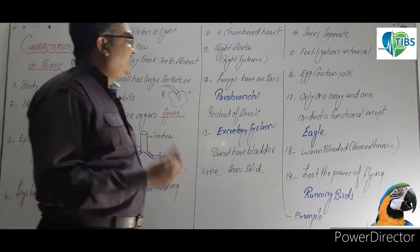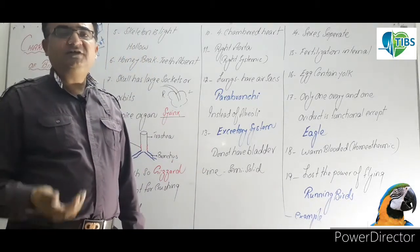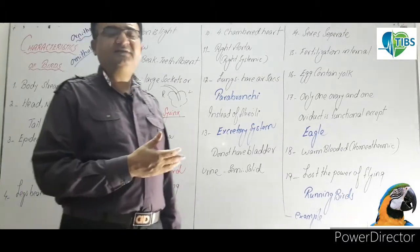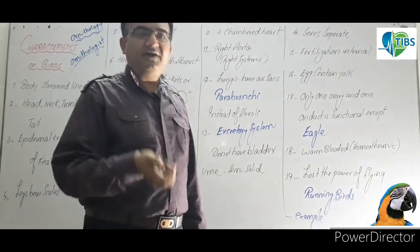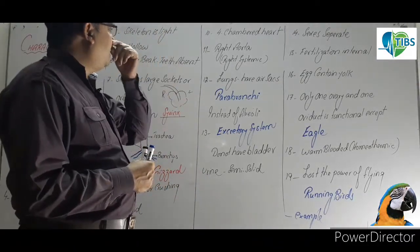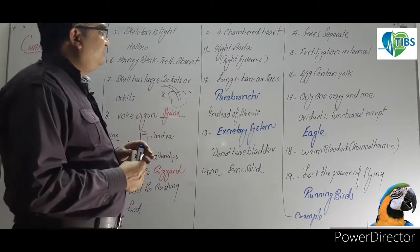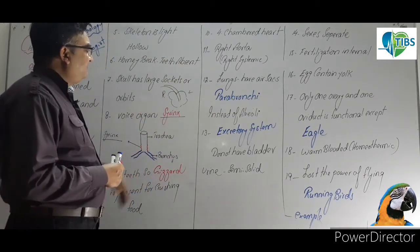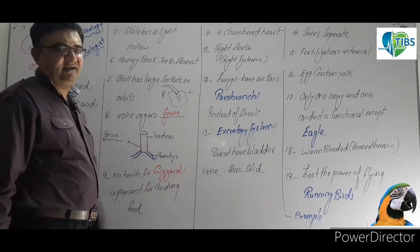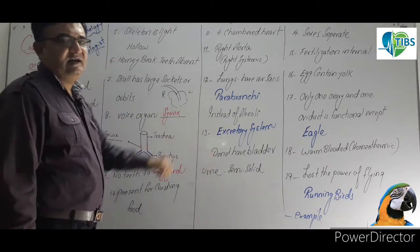Four-chambered heart. Their heart has four chambers. Mammals also have four chambers, and crocodiles also have four chambers. But one thing that differentiates them is that when the aorta comes out of the heart, it curves to the right side in birds, whereas in mammals it curves to the left side.